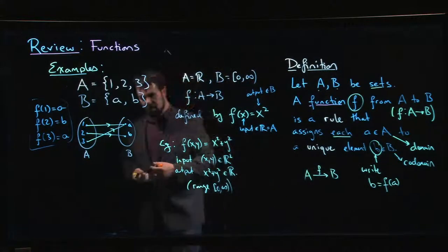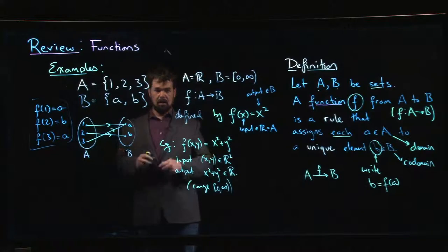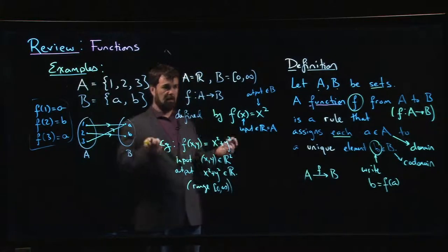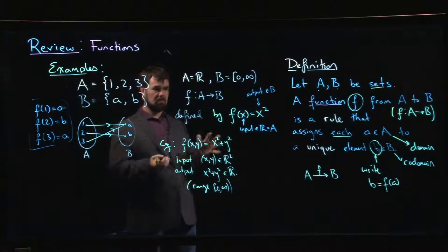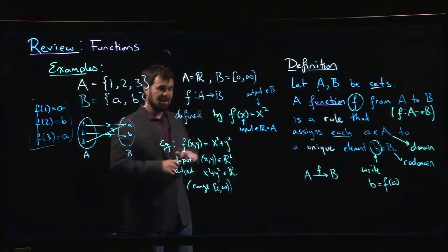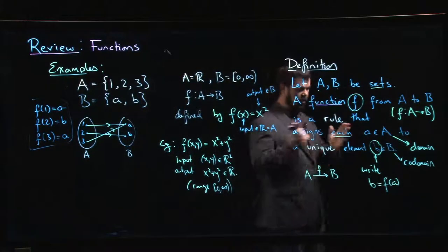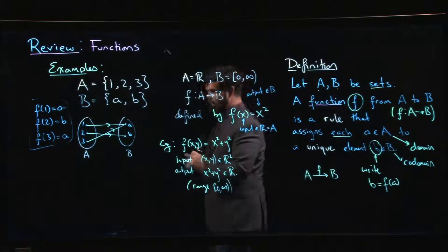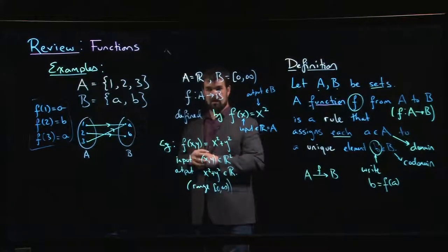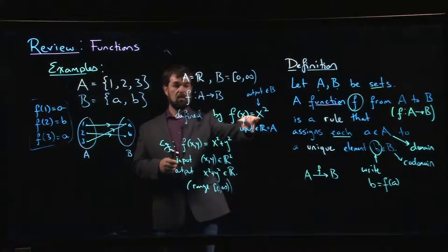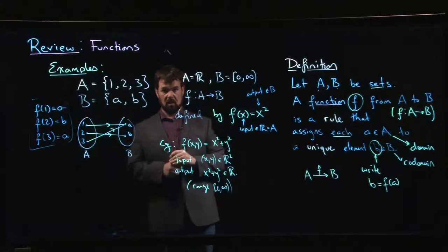On the other hand, any given daughter has only one biological mother. So you could go in the other way and say that is indeed a function going in the other direction. There's lots of different scenarios like that that you could consider, but we'll typically be looking at objects like this most of the time when we talk about functions.